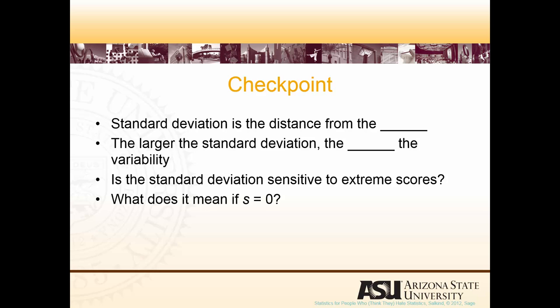As a recap, standard deviation is calculated by the distance from the mean. The larger the standard deviation, the larger the variability. Is standard deviation sensitive to extreme scores? Since standard deviation uses an average and subtracts the value of each observation from the average, yes — it is very sensitive to extreme scores. What does it mean if the standard deviation equals zero? It means all the points are equal, so there's no variability in the dataset.